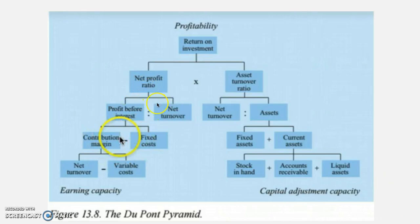You get the profit before interest. If you divide that by the net turnover and multiply by 100, you get the net profit ratio. The net profit ratio indicates how much in percentage we have left after paying our costs out of the turnover. So if the net profit ratio is 6%, it means that every time the company makes 100 kroner, they will have 6 kroner left after paying first their variable costs and then their fixed costs.